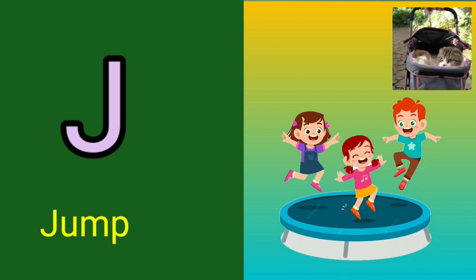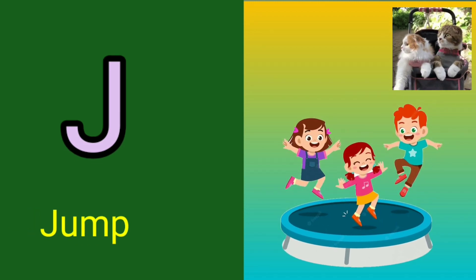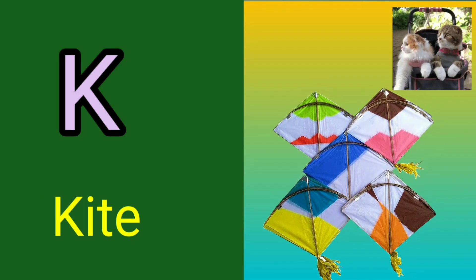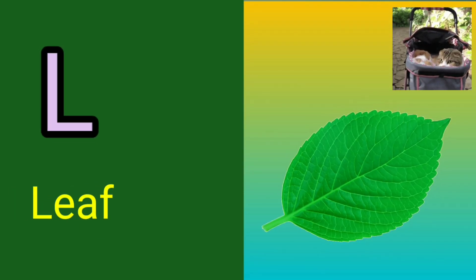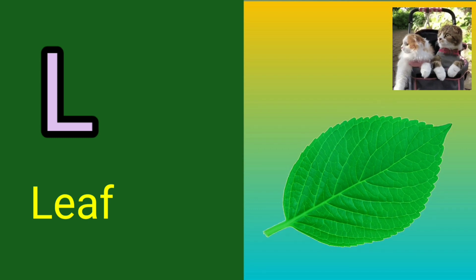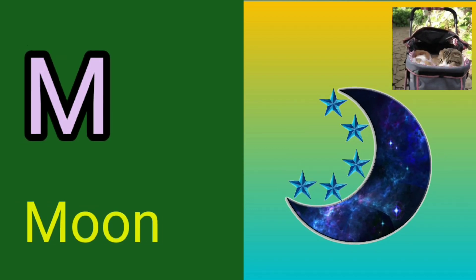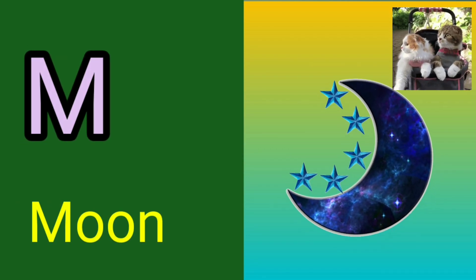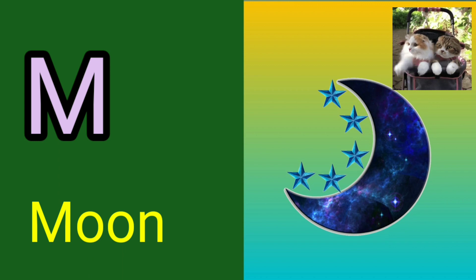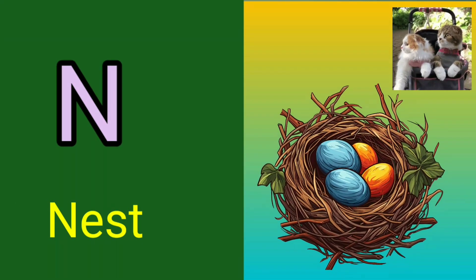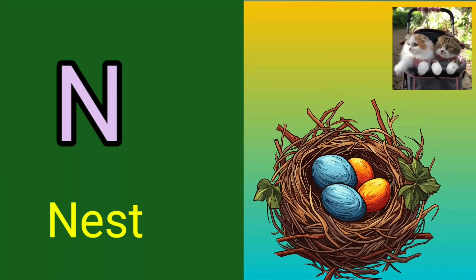J for jump, K for kite, L for leaf, M for moon, N for nest.